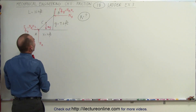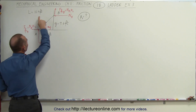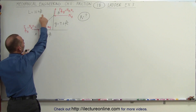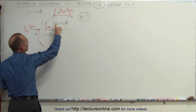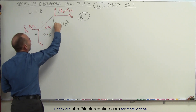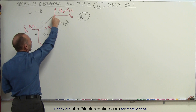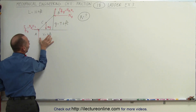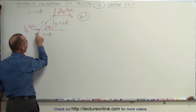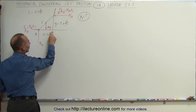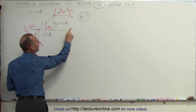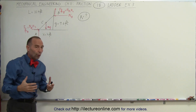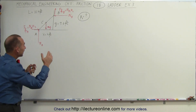The arrangement has a ladder of length 10.4 feet, 9.6 feet being the point above the ground where the ladder touches the wall, and 4 feet being the distance from the bottom of the ladder to the wall. The question is: what coefficient of friction is required to keep the ladder from sliding?